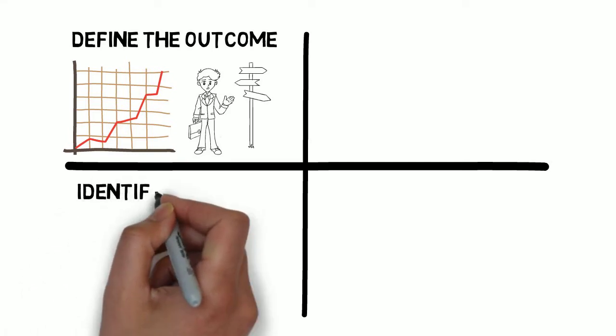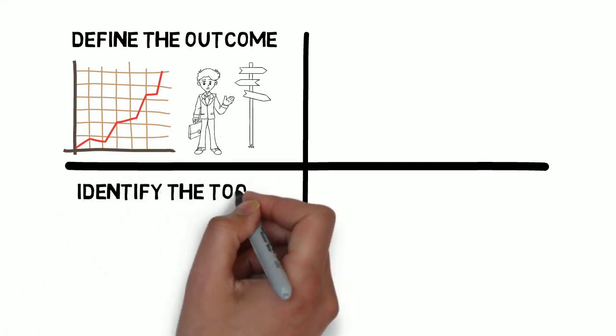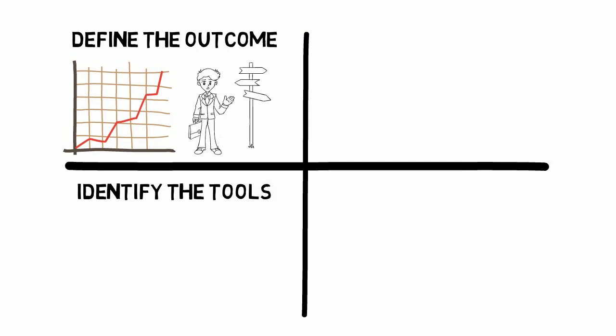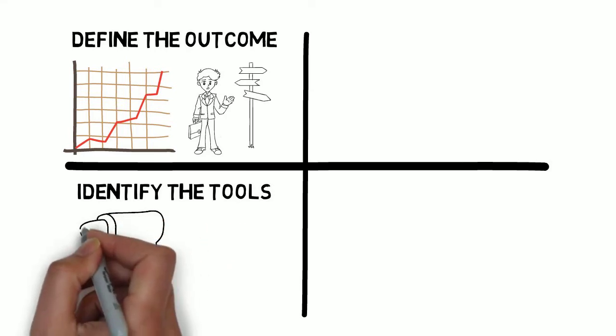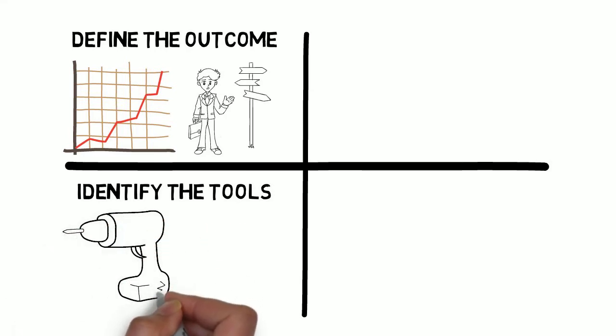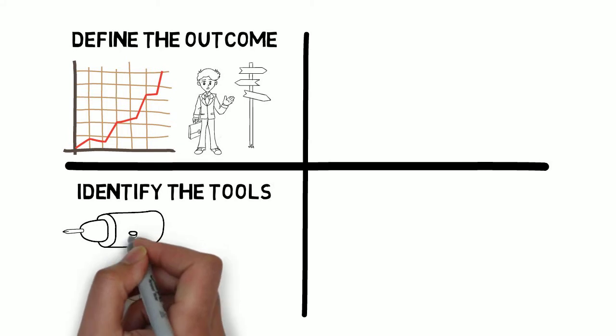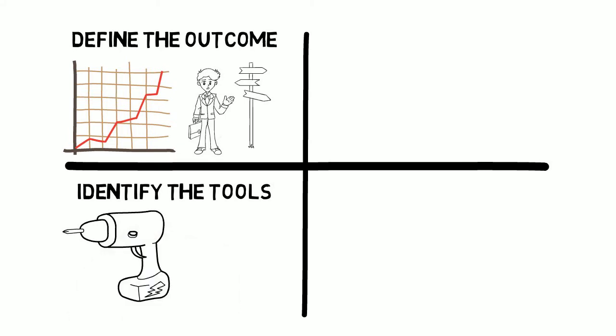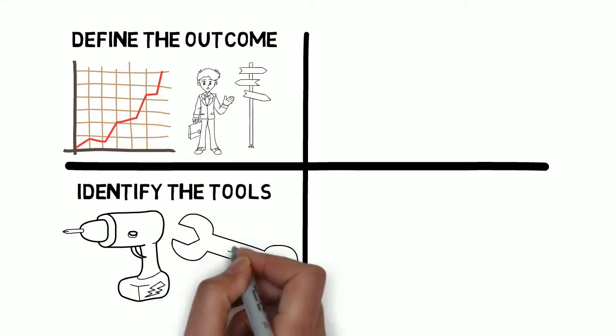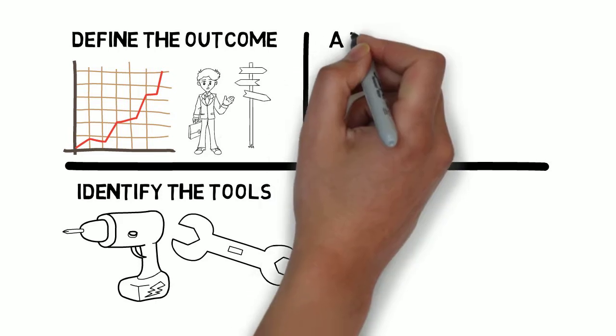The second part of the coaching plan is to identify the tools that are available. Every organization has tools at either the employees or the leader's disposal to assist with or aid in the completion of a job. If no such tools exist currently, this is a great opportunity for the leader to lead and help create these materials for their team. In this step, be sure to list out each possible tool that can play a part in the success of that defined outcome.